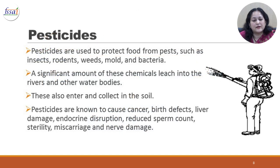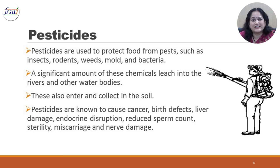Pesticides are used to protect food from pests such as insects, rodents, weeds, mold and bacteria. A significant amount of these chemicals leach into rivers and other water bodies from farms. When pesticides are sprayed on standing crops, they may also enter and collect in the soil. Pesticides are known to cause cancer, birth defects, liver damage, endocrine disruption resulting in reduced sperm count, sterility, miscarriage, and even nerve damage.